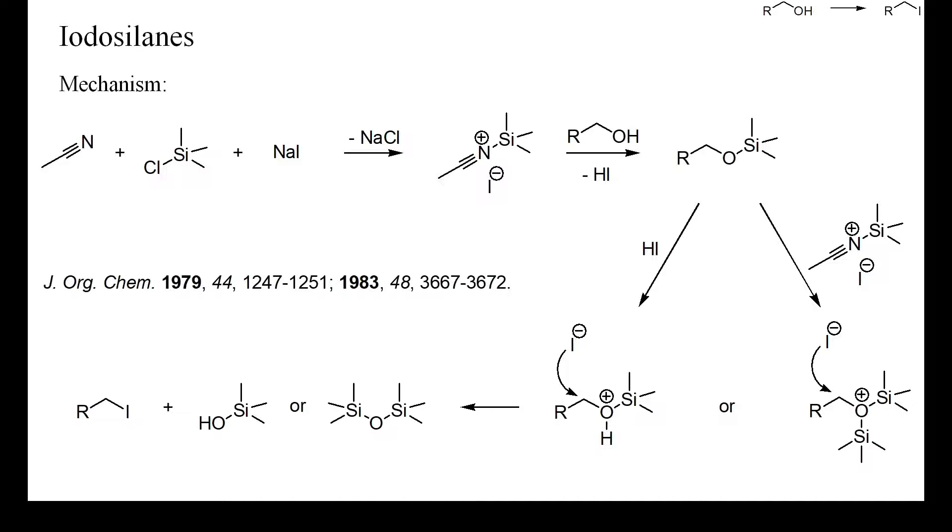Alcohols which readily form stable carbocations will not require twofold silylation and may give high yields of alkyl iodide with only one equivalent of chlorotrimethylsilane, while a less reactive alcohol may require two equivalents.